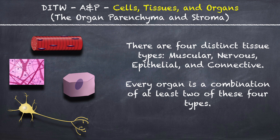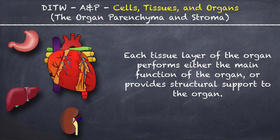There are four distinct tissue types: muscular, nervous, epithelial, and connective tissue types. Every organ is a combination of at least two of these four types. Each tissue layer of the organ performs either the main function of the organ or provides structural support to the organ.